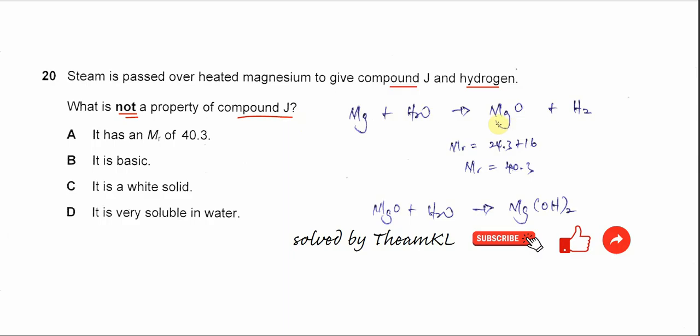produces magnesium oxide, not magnesium hydroxide. So compound J must be magnesium oxide and hydrogen gas. Let's look at the answers. It's asking which one is